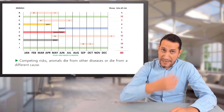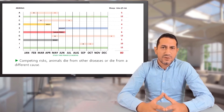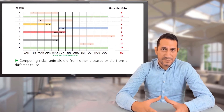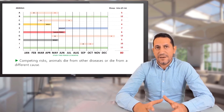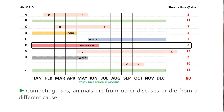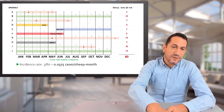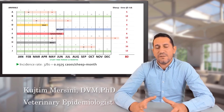One animal was slaughtered by the farmer, and another — animal H — was eaten by the big bad wolf seen in the picture. Both of these are considered competing risks: animals that die from other diseases or causes are competing risks. These animals still contribute to the total time at risk. Animal F, which was slaughtered, contributed six months, and the sheep eaten by the wolf contributed five months to the total.